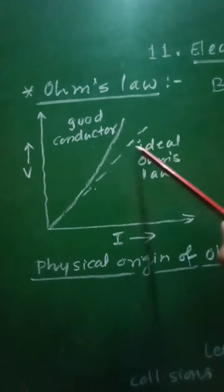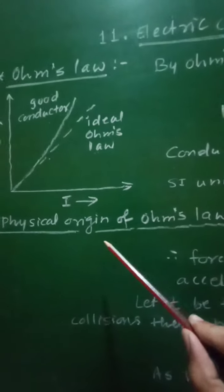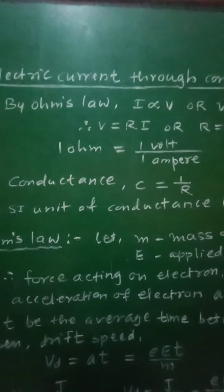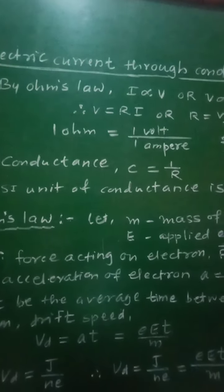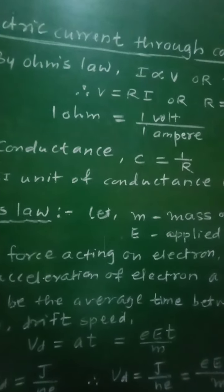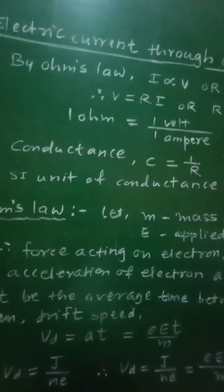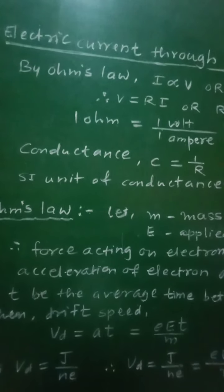Now let us see the physical origin of Ohm's Law. Electrical conduction is due to the motion of free electrons inside the conductor. These electrons collide with ion cores during their random motion, but it is assumed they do not collide with each other. The random motion on average is thus zero.